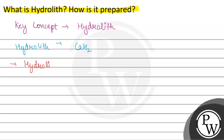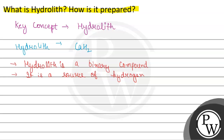So, hydrolith is a binary compound and it is a source of hydrogen. Hydrolith is made from calcium, and calcium is an alkaline earth metal, bonded with hydrogen. Hence, it is named as alkaline earth hydride.